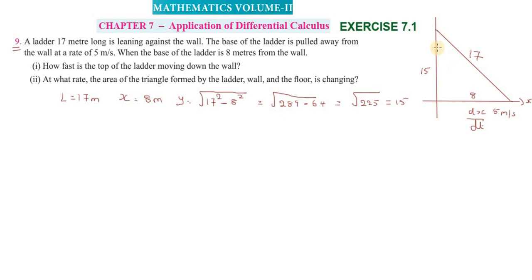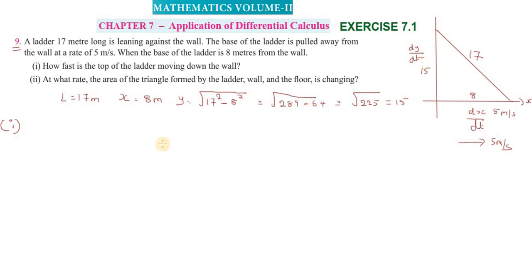Now for part one — how fast is the top of the ladder moving down the wall — we need dy/dt. Using the Pythagorean theorem, the equation is x² + y² = 17². Differentiating both sides with respect to t gives: 2x(dx/dt) + 2y(dy/dt) = 0.